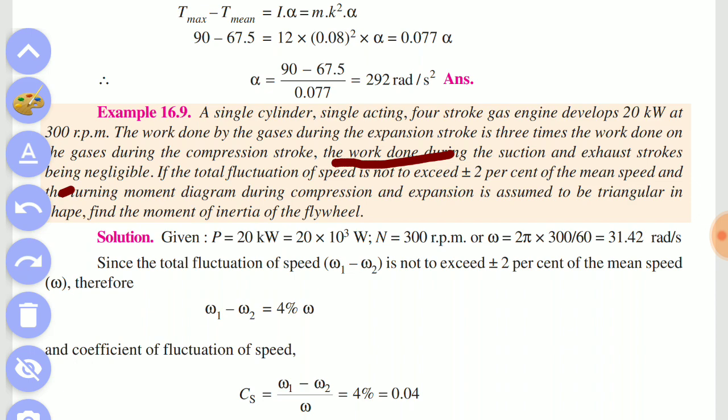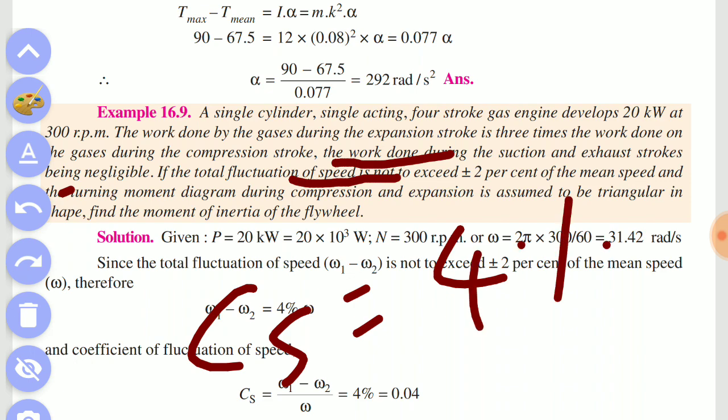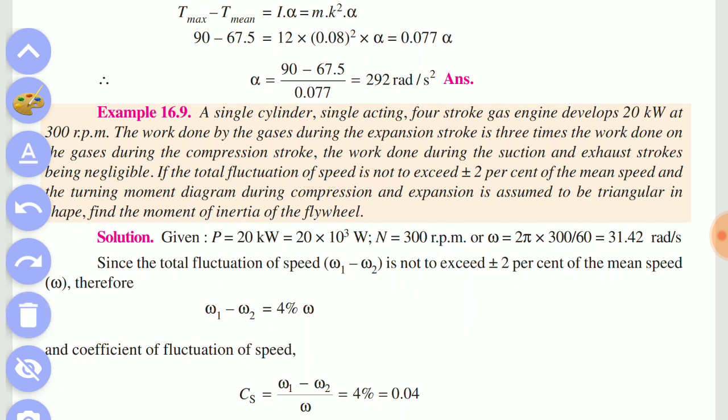If the total fluctuation of speed is not to exceed plus or minus 2% of the mean speed, that is plus or minus 1 equals 4%, which is 2 into 2 = 4%, or 0.04.